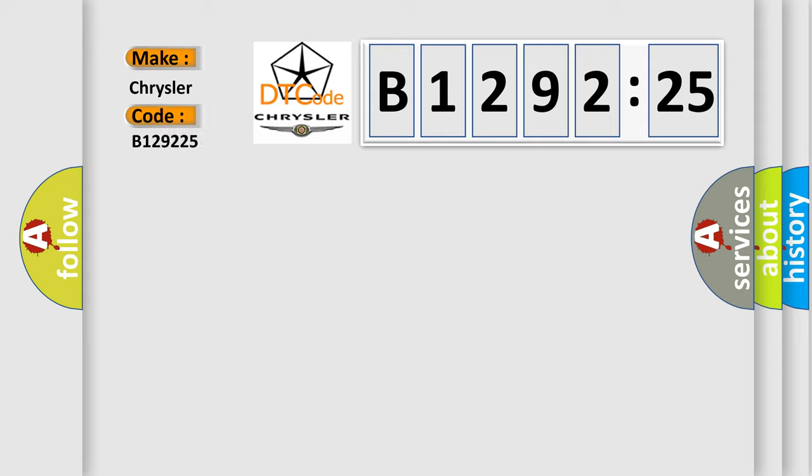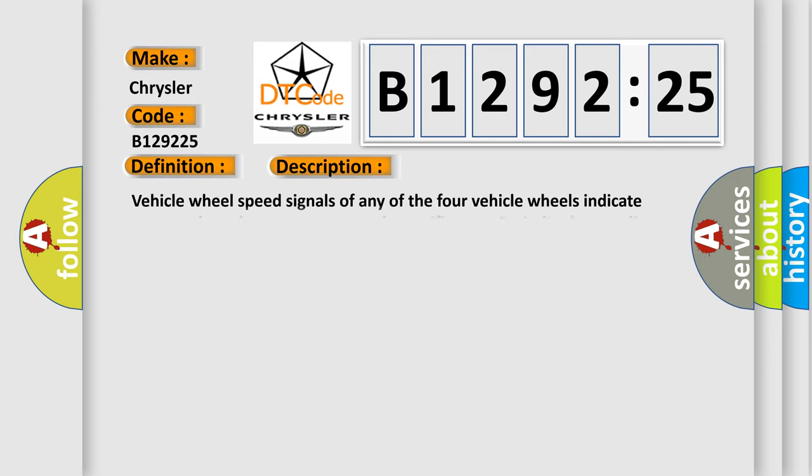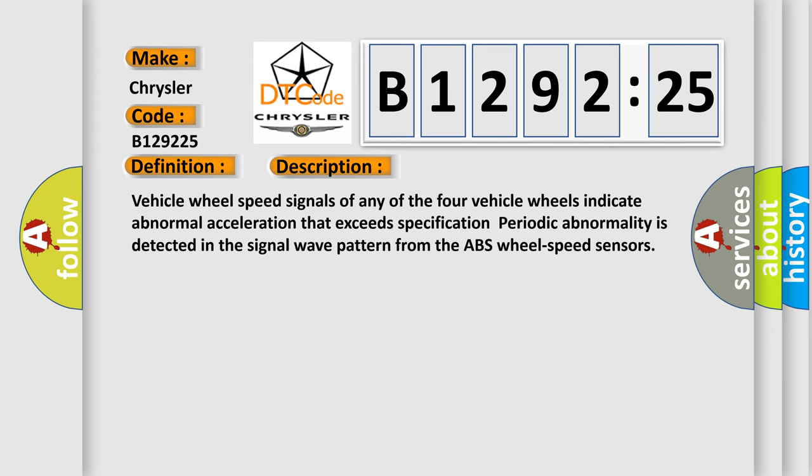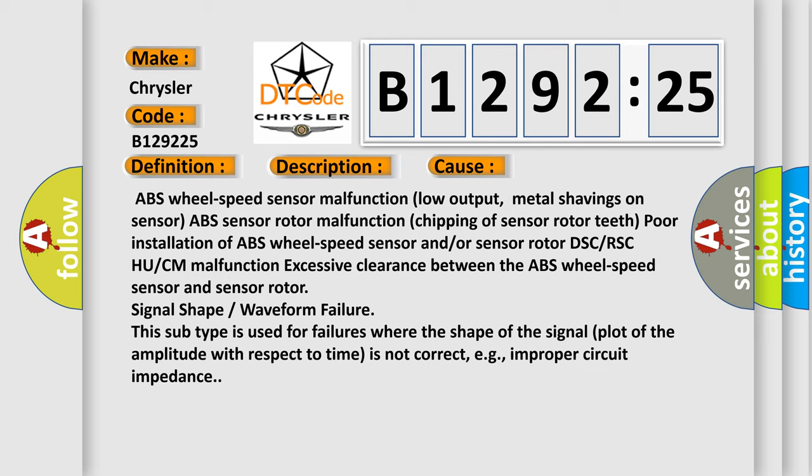B129225 interpret specifically for Chrysler car manufacturers? The basic definition is: RFABS wheel speed sensor or ABS sensor rotor system. And now this is a short description of this DTC code. Vehicle wheel speed signals of any of the four vehicle wheels indicate abnormal acceleration that exceeds specification. Periodic abnormality is detected in the signal wave pattern from the ABS wheel speed sensors. This diagnostic error occurs most often in these cases.